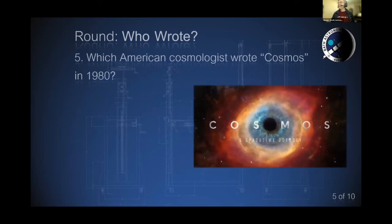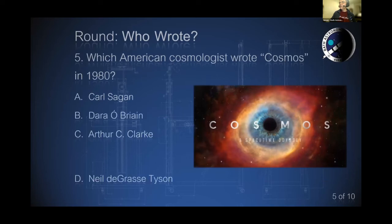Which American cosmologist wrote Cosmos in 1980? Was it Carl Sagan, was it Darrow Brian, was it Arthur C. Clarke, or was it Neil deGrasse Tyson? Which American cosmologist wrote Cosmos back in 1980?